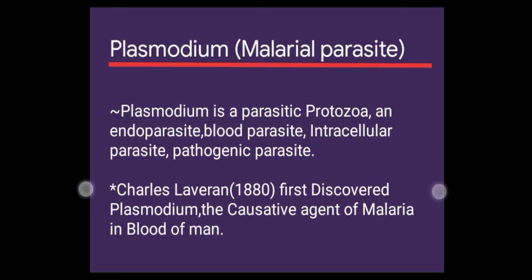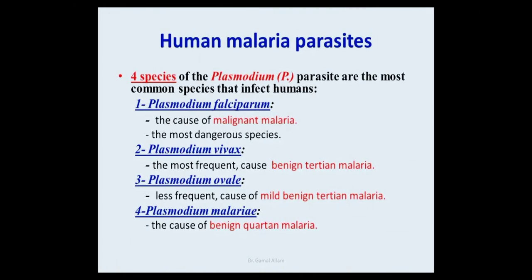Plasmodium, or the malaria parasite, is a parasitic protozoa — an endoparasite, blood parasite, intracellular parasite, and pathogenic parasite. Laveran in 1880 first discovered Plasmodium as the causative agent of malaria in the blood of man.